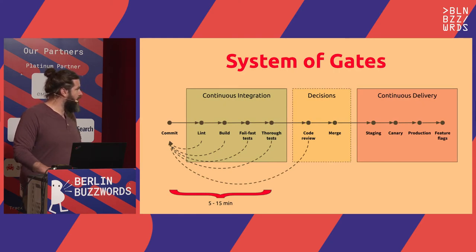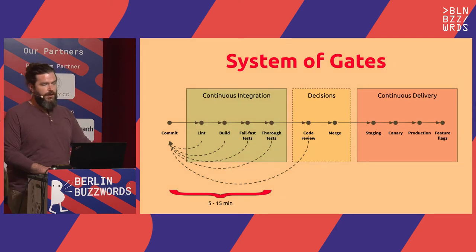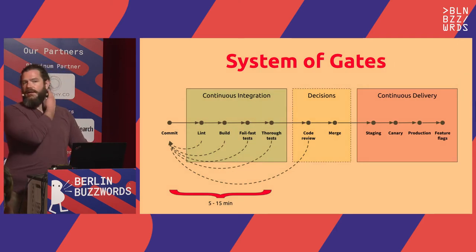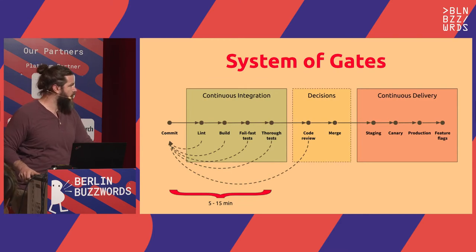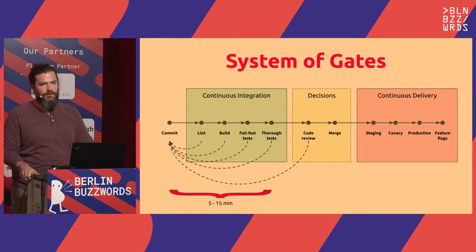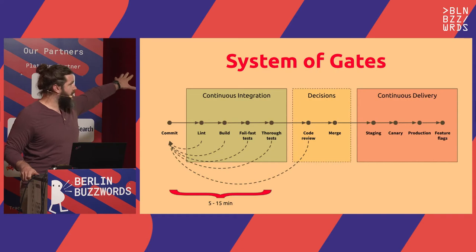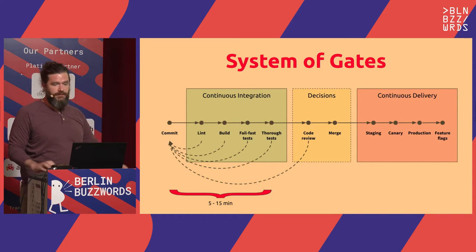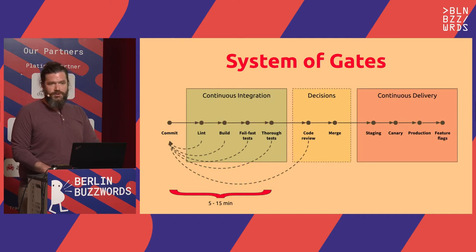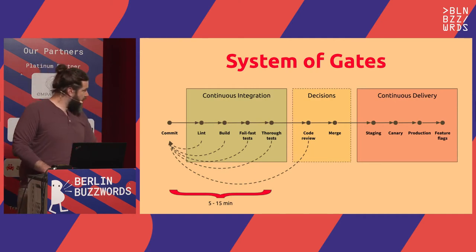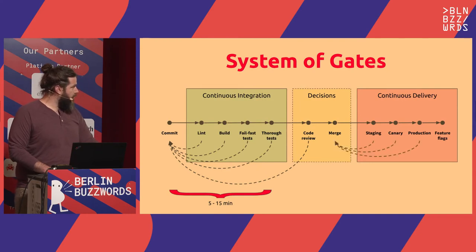After that, you want to have a code review stage, which is a human stage. You can have automated processes that help you with code review, but typically this is a human looking at things guided by information from continuous integration — helping them make that decision. Of course, you don't want to merge things that have failing tests, and then after that we can talk about merging.